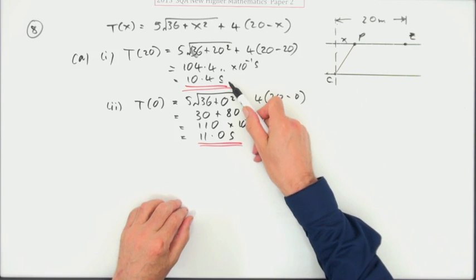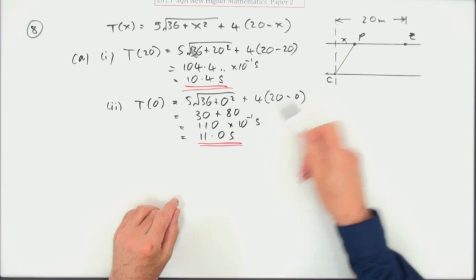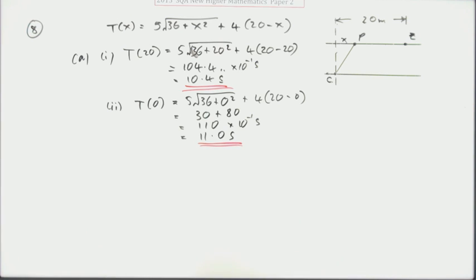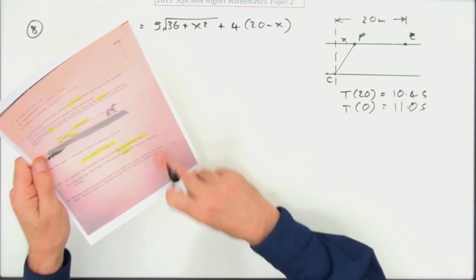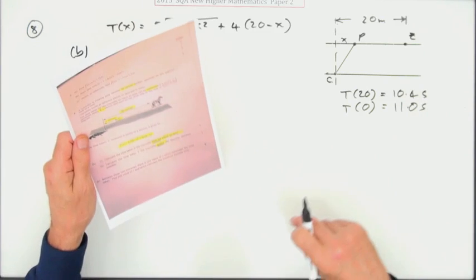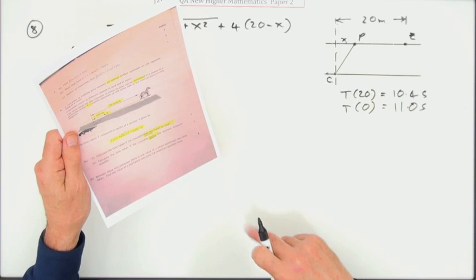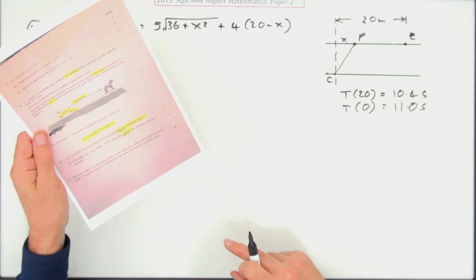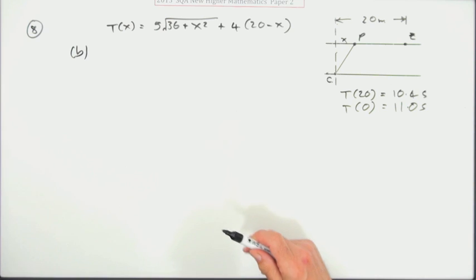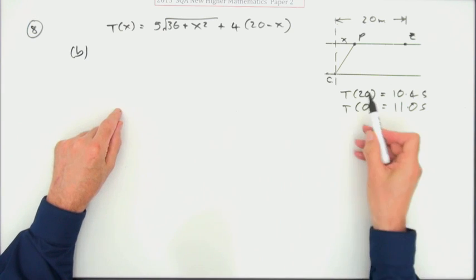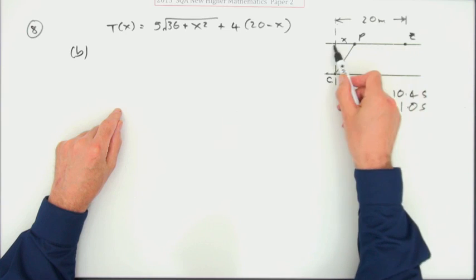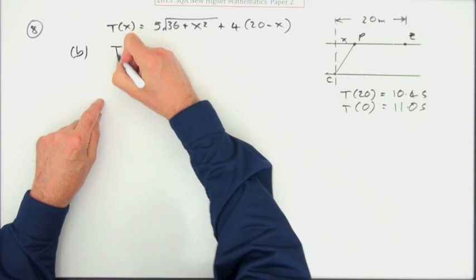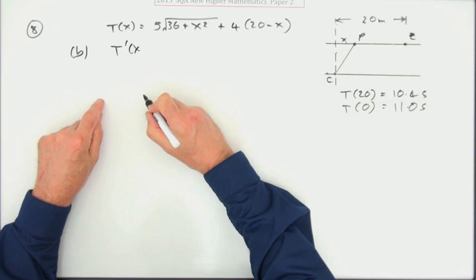So overall, one of those could be the smallest and the other could be the biggest, unless there's a stationary value which might exceed one of them. So it comes to the main marks, eight marks for this. Between these two extremes, there is one value of x which minimizes the time taken. Find this value of x and calculate the minimum possible time.